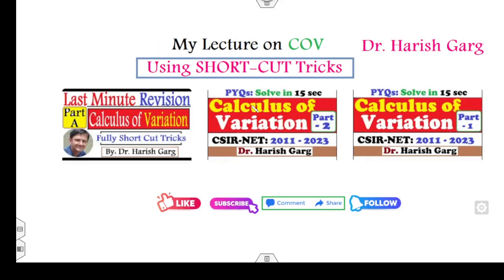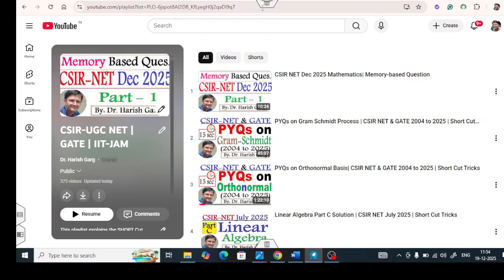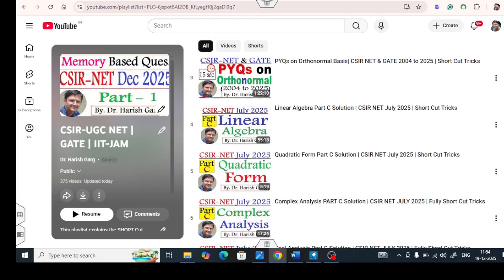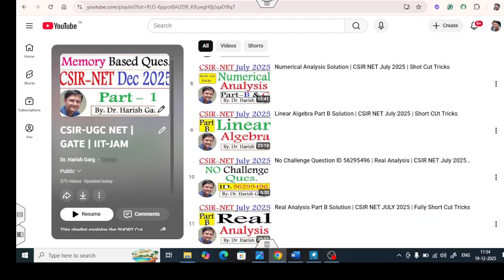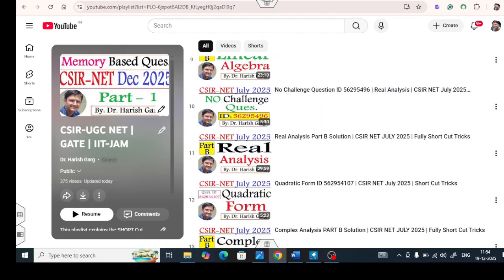For that, if you already watched my these three lectures, last minute revision on the calculus of variations, calculus of variation part one and part two, then you can solve any question. You can solve any question which is related to the calculus of variation within the one minute time period. You can watch these lectures available under the playlist CSIR UGC NET channel name Dr. Harish Garg. You can see all these lectures are available fully shortcut tricks, whether it is real analysis, complex analysis, numerical and so on.